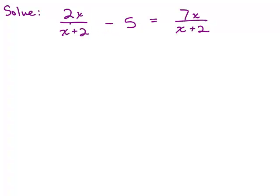In this particular problem, notice that two terms have the same denominator. When that happens, you could combine those two terms. If I subtract 2x over (x+2) from both sides, I'll have negative 5 equals something. Also, pay attention to the denominator — it cannot equal 0. The only denominator here is (x+2), so x cannot equal negative 2.